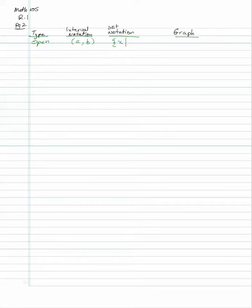Let's review interval notation. We have an open interval, meaning the endpoints are not included. We write it as (A, B), or using set notation: the set of X's such that A is less than X is less than B. You graph it with open circles on A and B and shade in between. The book uses parentheses; I prefer open circles.